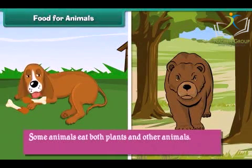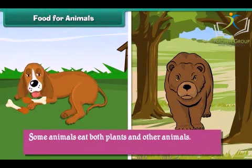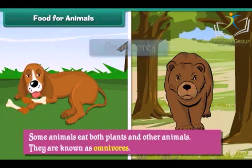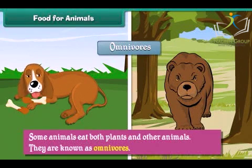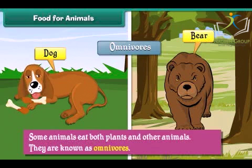Some animals eat both plants and other animals. They are known as omnivores. Examples of omnivores are bears, dogs etc.